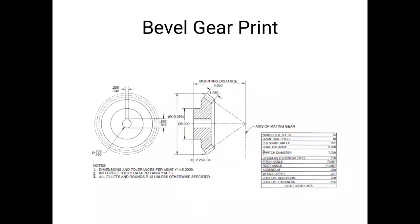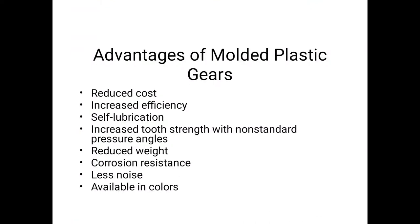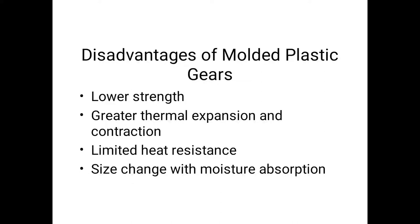Plastic gears: generally designed in same manner as gears made from other materials. Glass fiber adds reinforcement and reduces thermal expansion. Additives act as built-in lubricants and provide increased wear resistance. Polytetrafluoroethylene (PTFE), silicones, and molybdenum disulfide materials are used to make plastic gears. Advantages of molded plastic gears: reduced cost, increased efficiency, self-lubrication quality, increased tooth strength with non-standard pressure angles, reduced weight, corrosion resistance, less noise, available in different colors. Disadvantages: lower strength, greater thermal expansion and contraction, limited heat resistance, size change with moisture absorption.